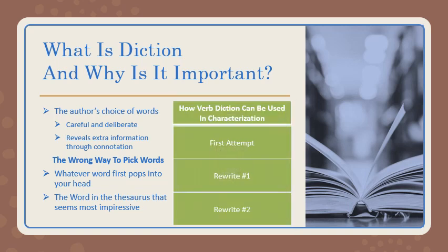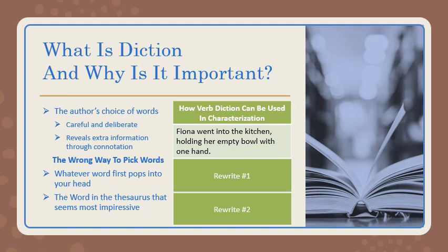So let's look at how diction can be used in characterization. We start off with this sentence: 'Fiona went into the kitchen holding her empty bowl with one hand.' What we have is one sentence about this character Fiona — she's going into the kitchen with an empty bowl in her hand. But we don't really know anything about Fiona. Do we know what she looks like? No. Do we know what she believes or how she acts? No. Nothing like that. And a lot of this comes down to the diction we've used, especially the diction concerning the verbs: 'went' and 'holding.'